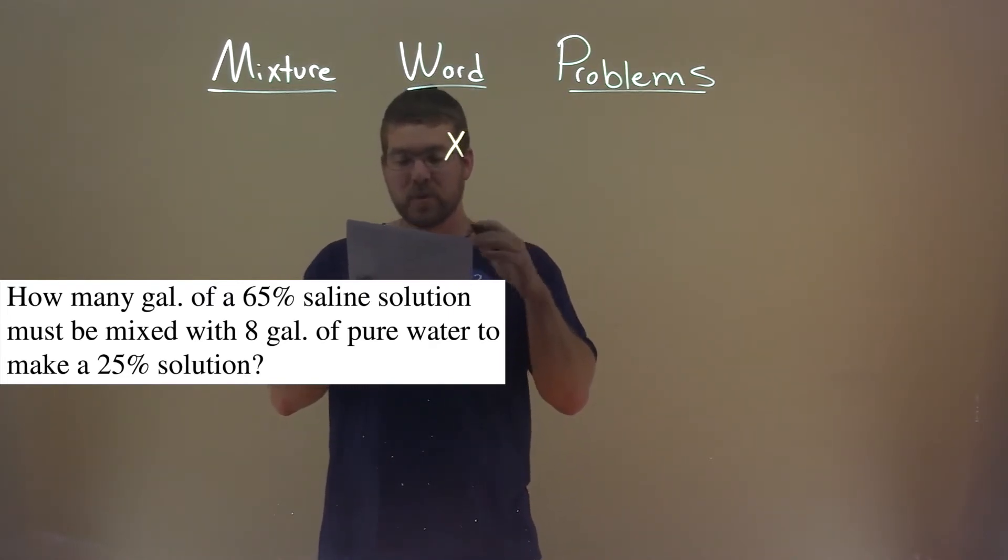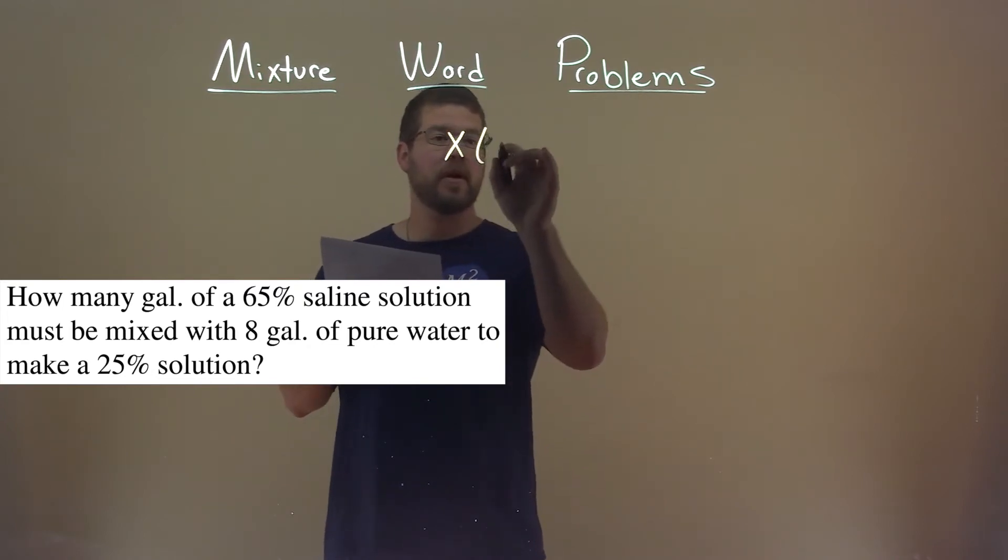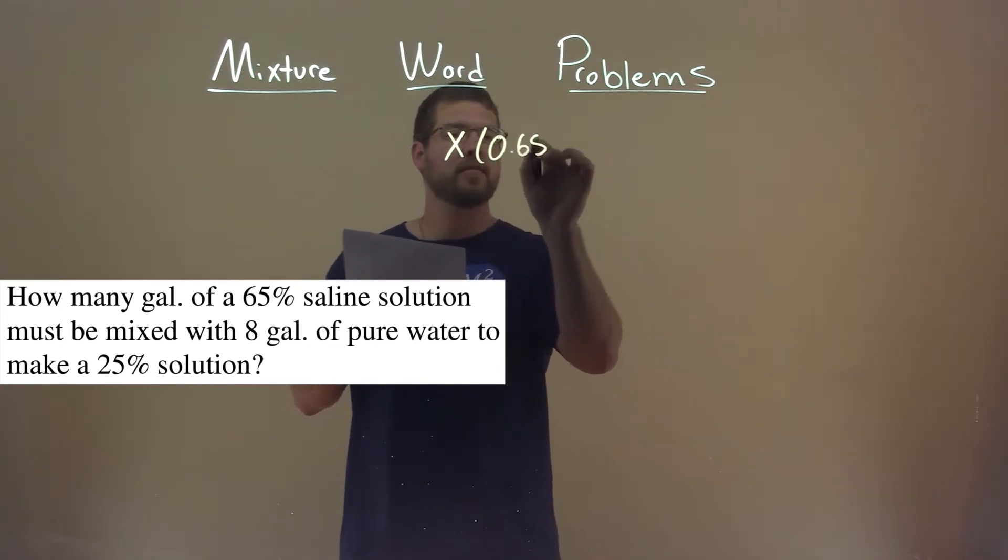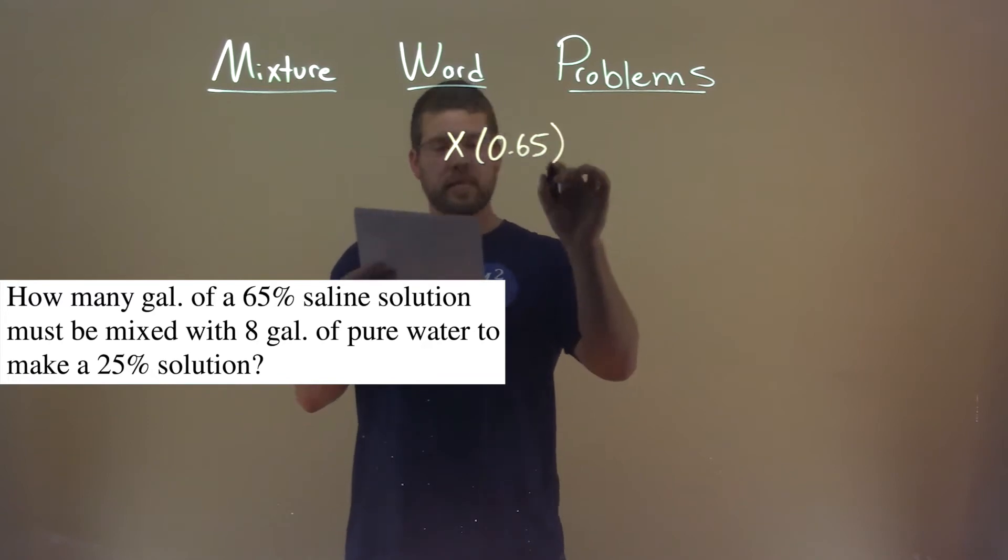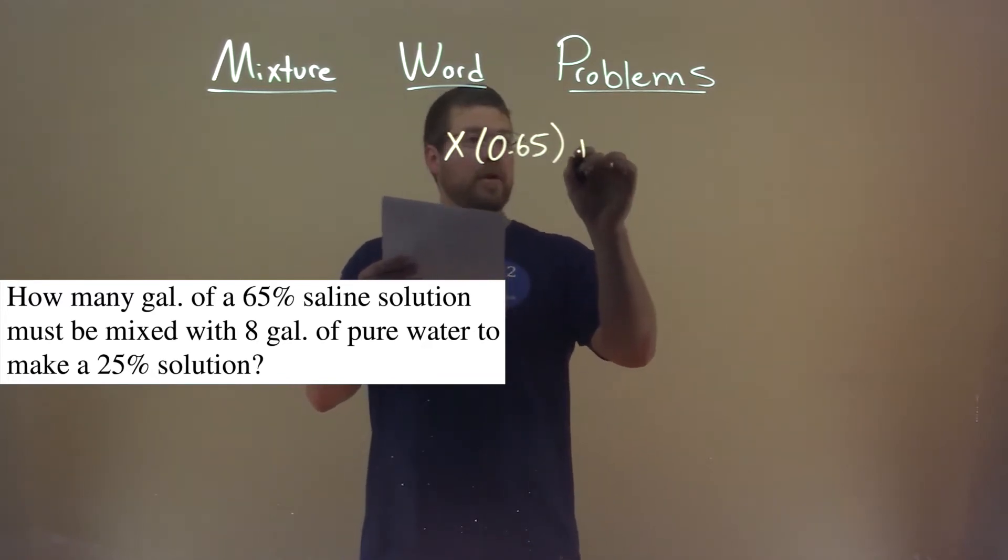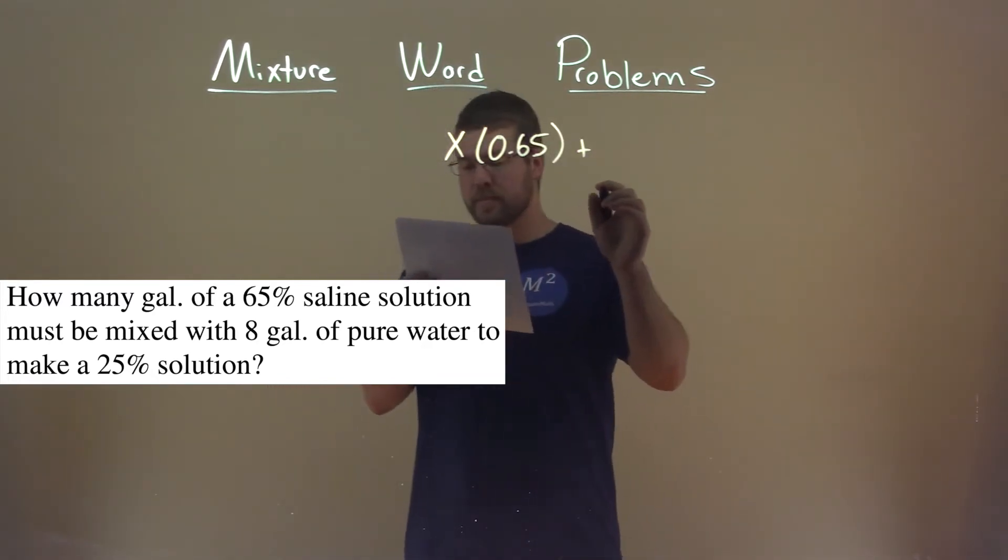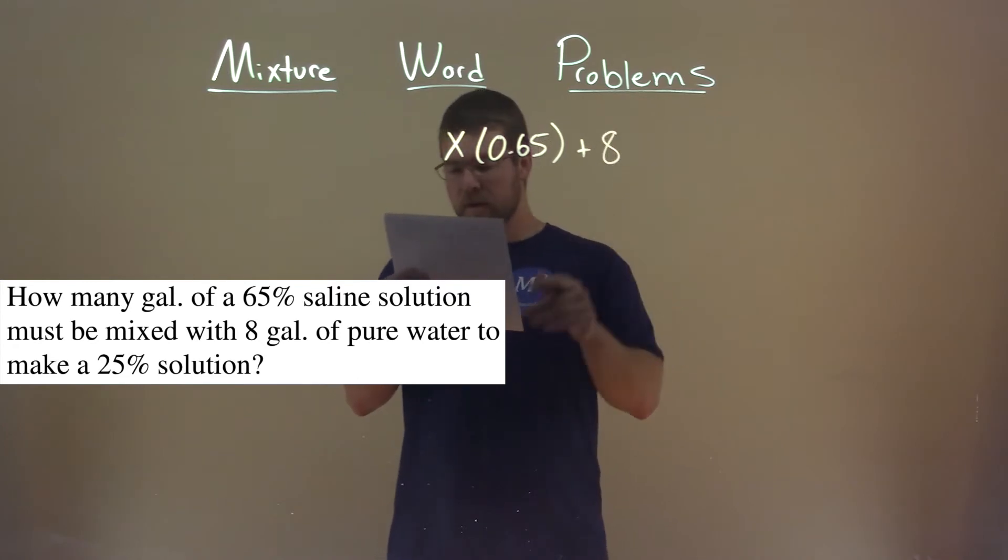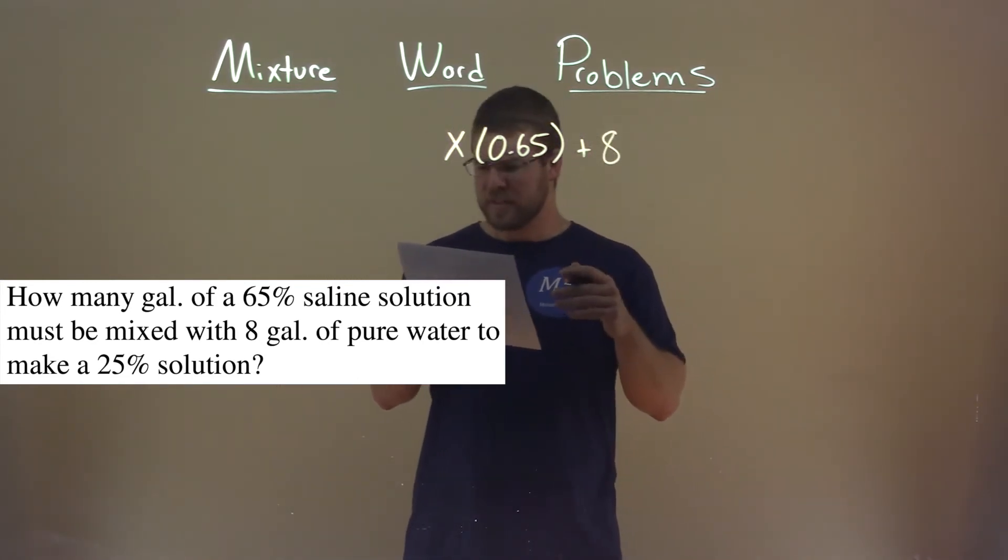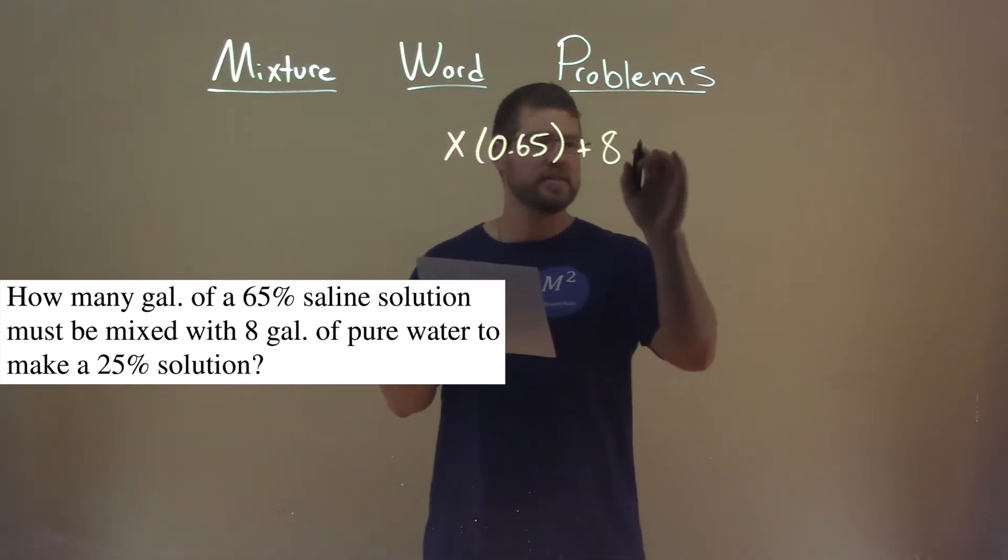But we know it's a 65%, so we're multiplying that by 0.65. And we're combining that with 8 gallons of pure water. So, what's a saline solution of pure water? Zero.